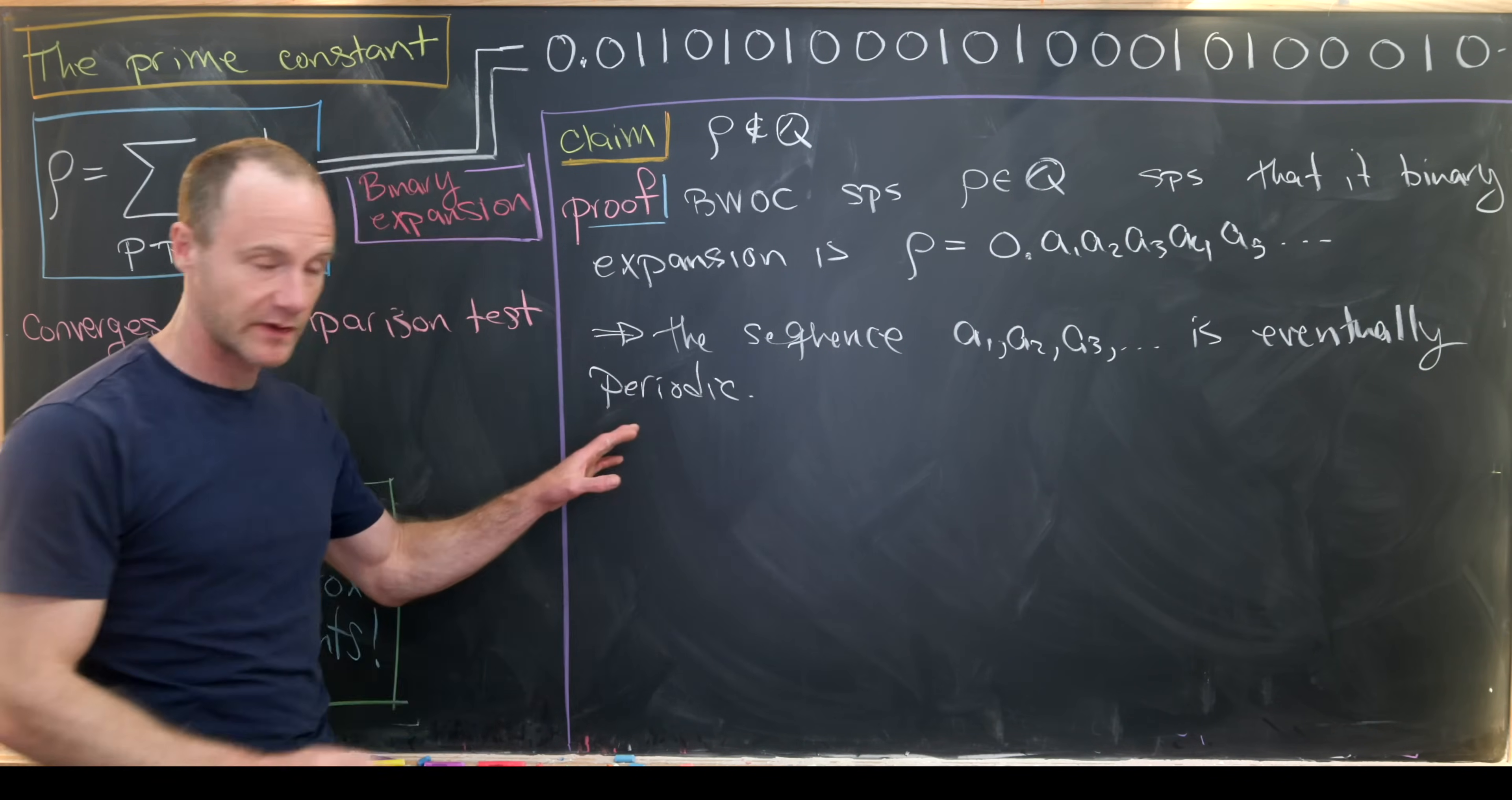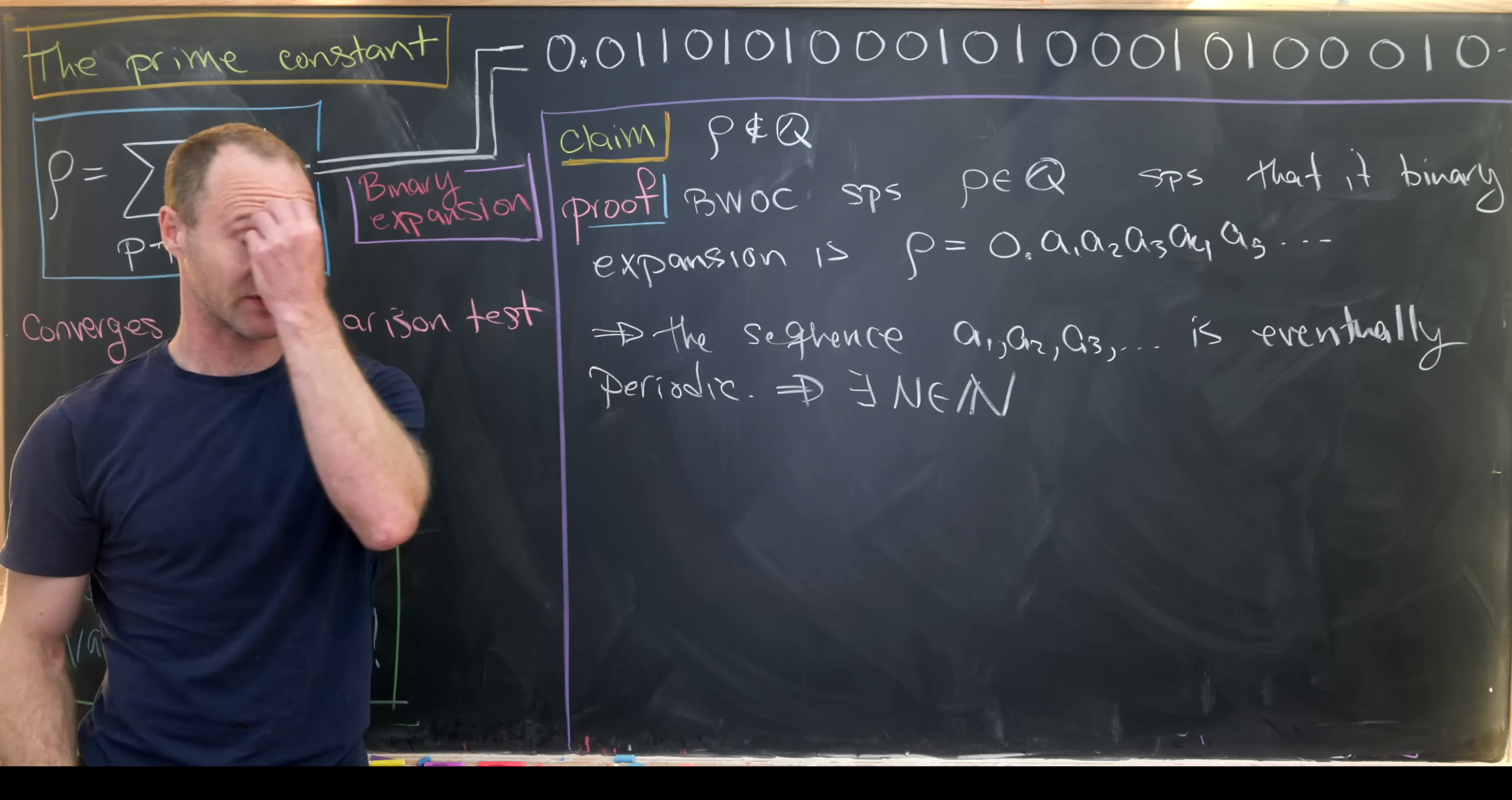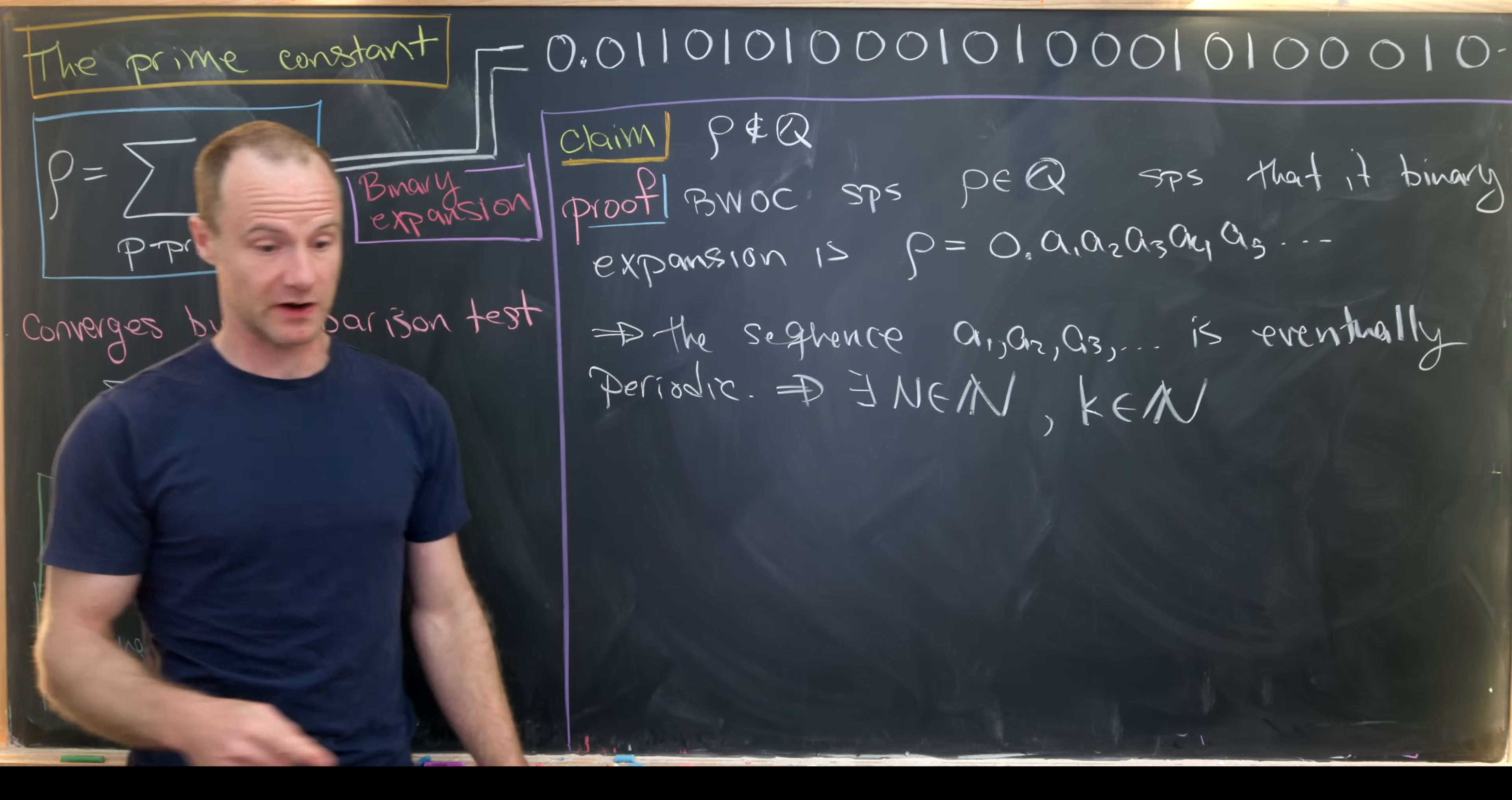So how do we know that? Well, we know that because we've assumed that this is rational. So what does that tell us? So that tells us that there exists some capital N, which is a natural number. We think about this capital N as being as large as we need it to be to get to this eventual periodic point. And we have a k, which is also a natural number. That'll be the length of the period.